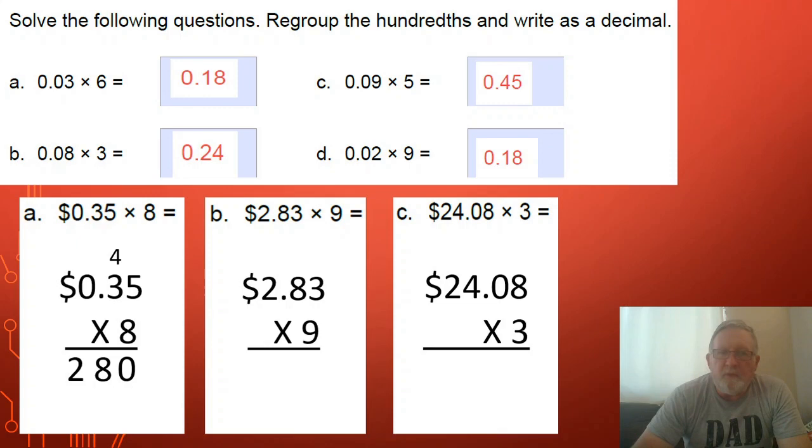Now the last thing we need to do is work out where the decimal point goes. It's easiest if I look at how many numbers follow the decimal point in this whole area. I will see there are one, two, and so in my answer the decimal point is placed between the two and the eight so that two numbers follow the decimal point. And of course two and eighty hundredths in money is two dollars eighty.